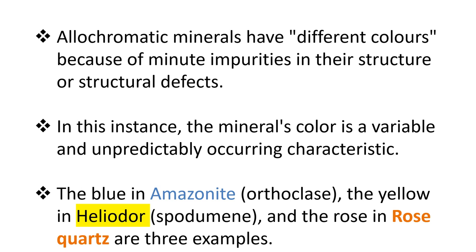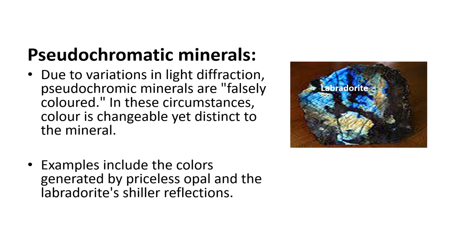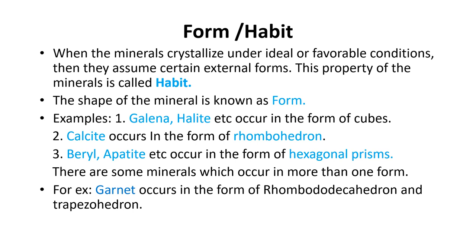Pseudochromatic minerals are falsely colored due to variations in light diffraction. The color is changeable but yet distinct to that mineral. Examples include the colors generated by opal and labradorite and schiller reflections — these are all examples of pseudochromatic minerals.